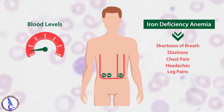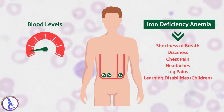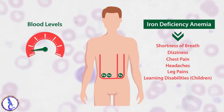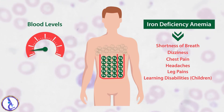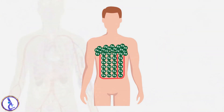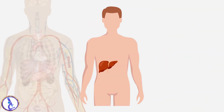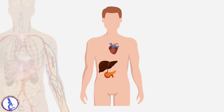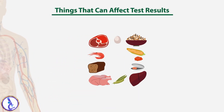Iron deficiency anemia may lead to shortness of breath, dizziness, chest pain, headaches, and leg pains. Children may develop learning disabilities if the deficiency persists. On the other hand, absorption of too much iron can lead to progressive accumulation and damage to organs such as the liver, heart, and pancreas.